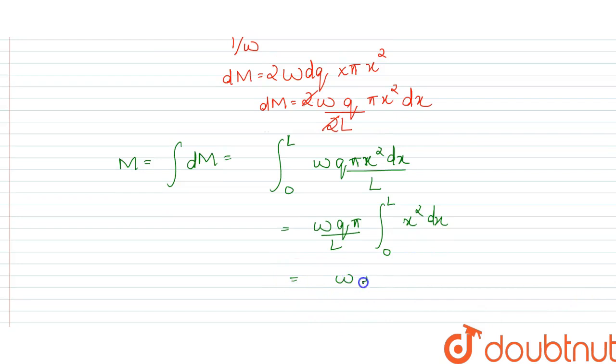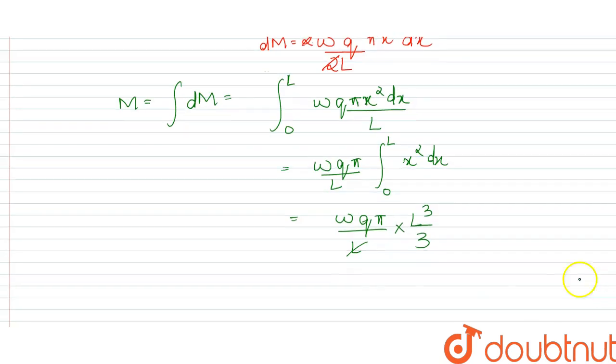So the value is omega Q π upon L times L cubed by 3. So L cancels, then we will have the magnetic moment equals omega Q π L squared by 3.